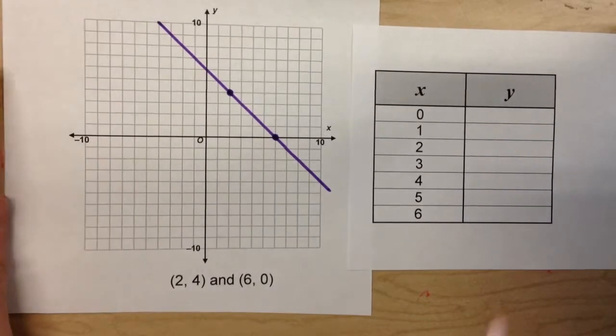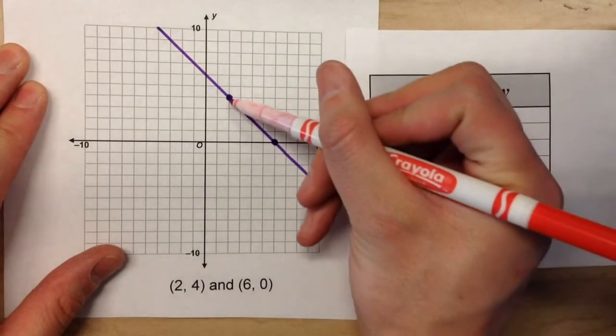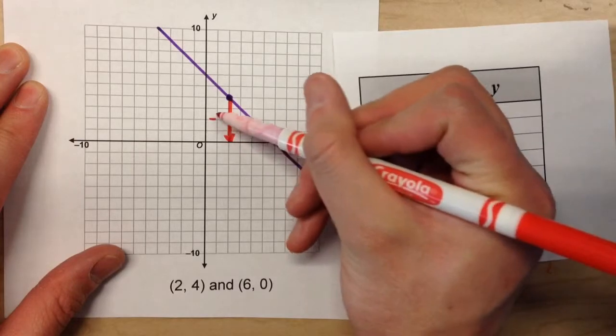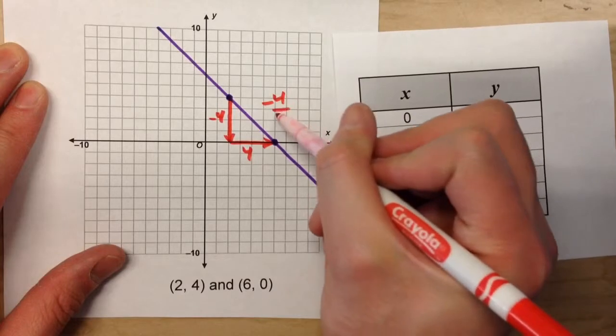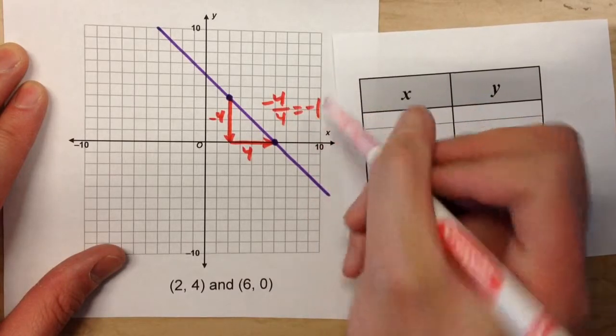But now that I have my line, I can see that my slope is going to be down 4 and over 4. So negative 4 over 4, which reduces to negative 1.